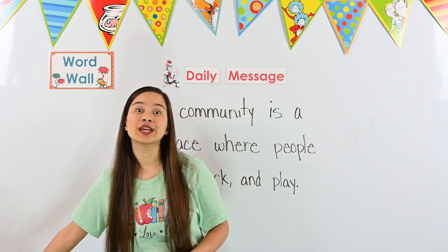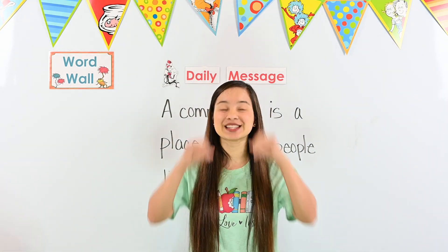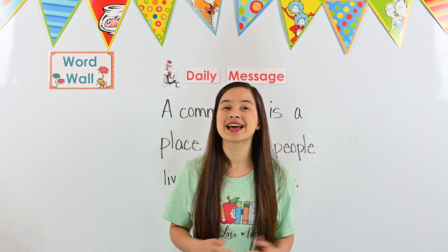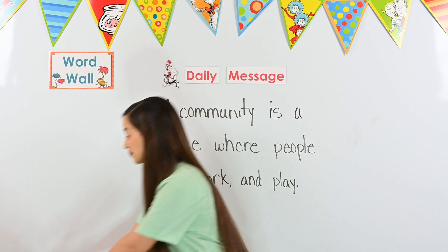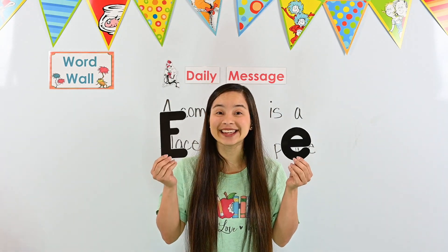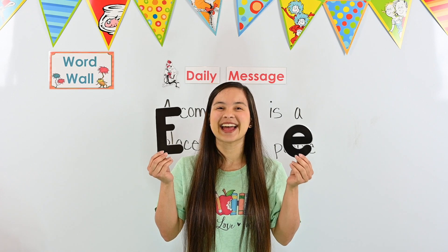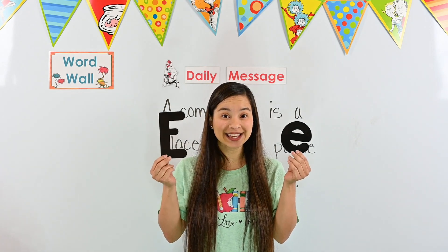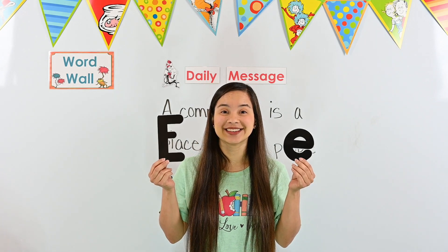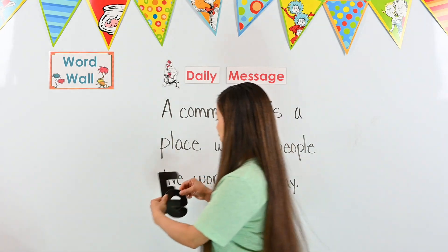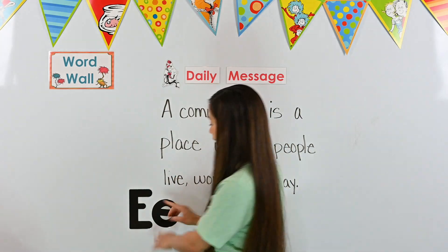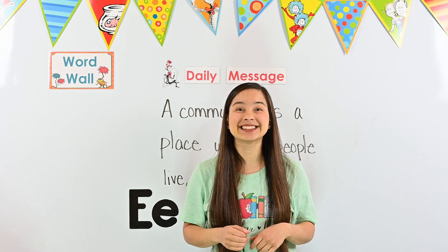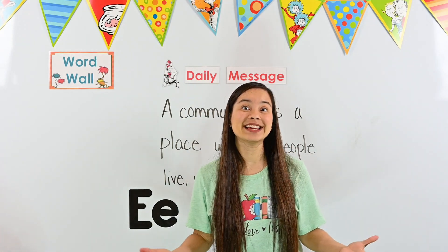Before we talk about our message, we are going to be letter detectives. We are going to look for our letter of the week. Can you help me? First, let's take a look at our letter of the week. This week, we are learning the letter E. Can you say E? The letter E makes the E sound. Let's put our E on the board so we remember what it looks like. We have our uppercase E and our lowercase E. Now we need to put on our detective goggles. Let's see if we can find the E's in today's message.